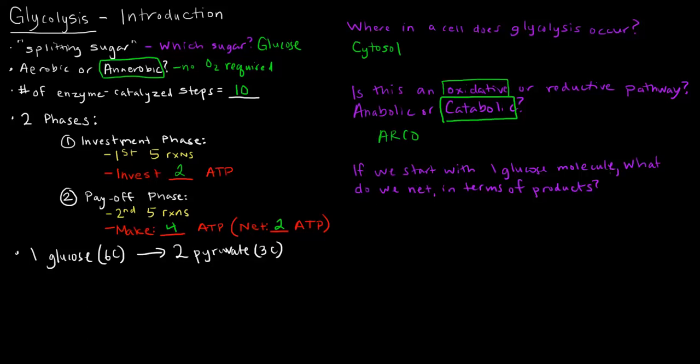Now, if we start off with one glucose molecule in glycolysis, and that one glucose molecule goes all the way through, what do we net in terms of products? So what are the products of glycolysis given one glucose molecule? Well, one of our products, of course, is that we get two pyruvates, and we net two ATP. In addition, we also create two NADHs.